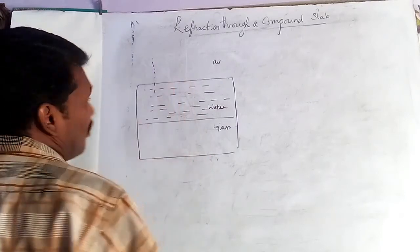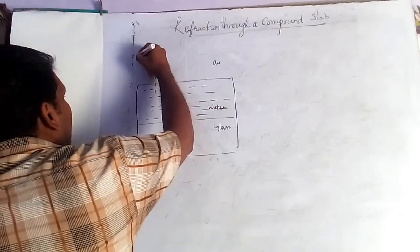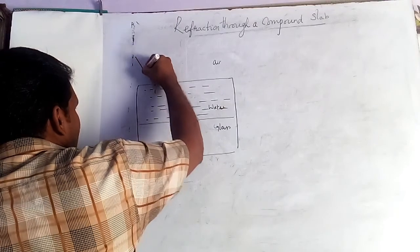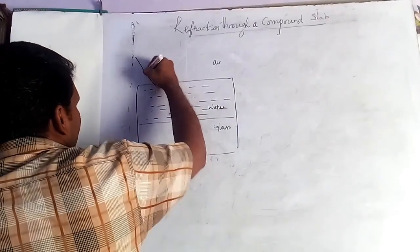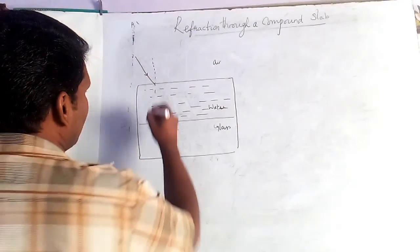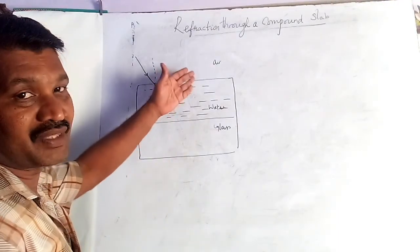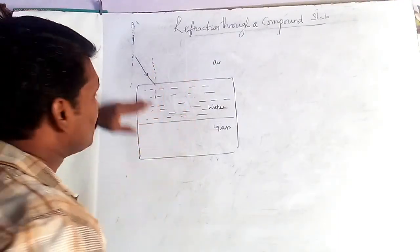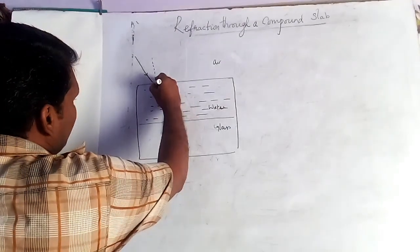This is the normal. At a particular angle of incidence, the ray is coming from the air and enters through the water. Since compared with air, water is a denser medium, so the ray must go towards the normal.